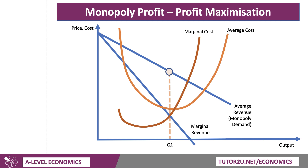Here's the diagram showing the average revenue curves for the monopoly. We call it AR (monopoly demand) — a downward-sloping AR. Marginal revenue lies beneath and below. And some short-term cost curves: marginal and average cost. The profit-maximising output is Q1, where MR meets MC.